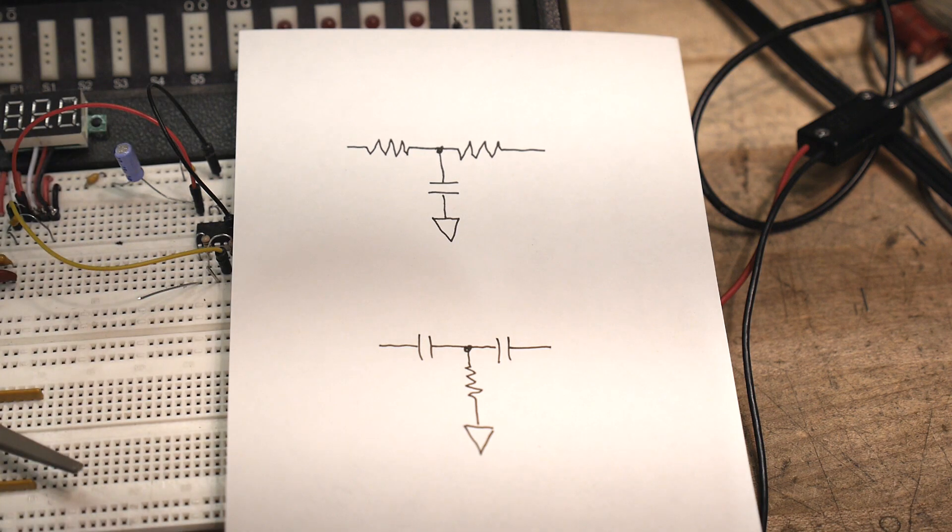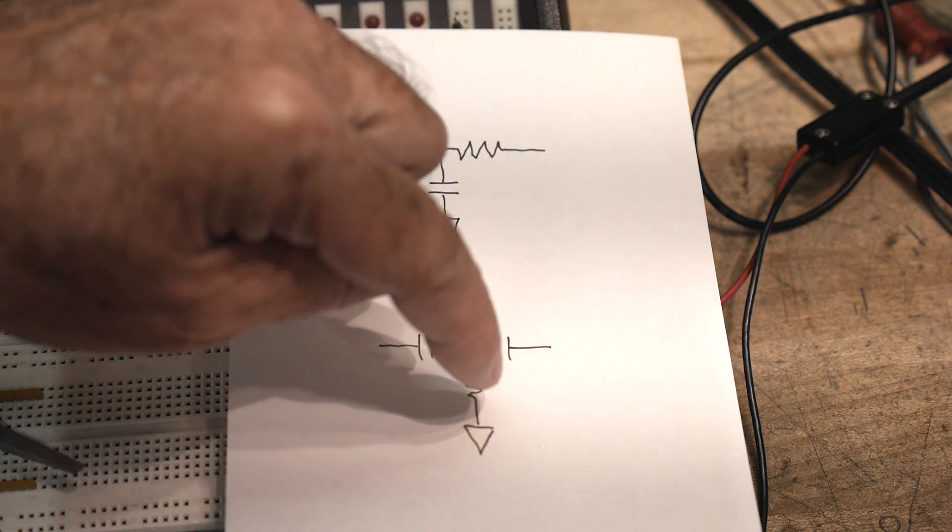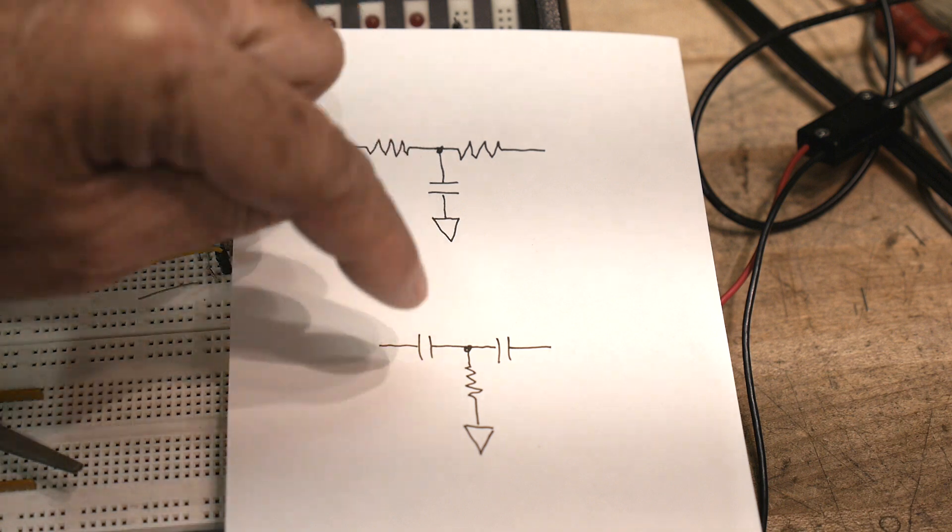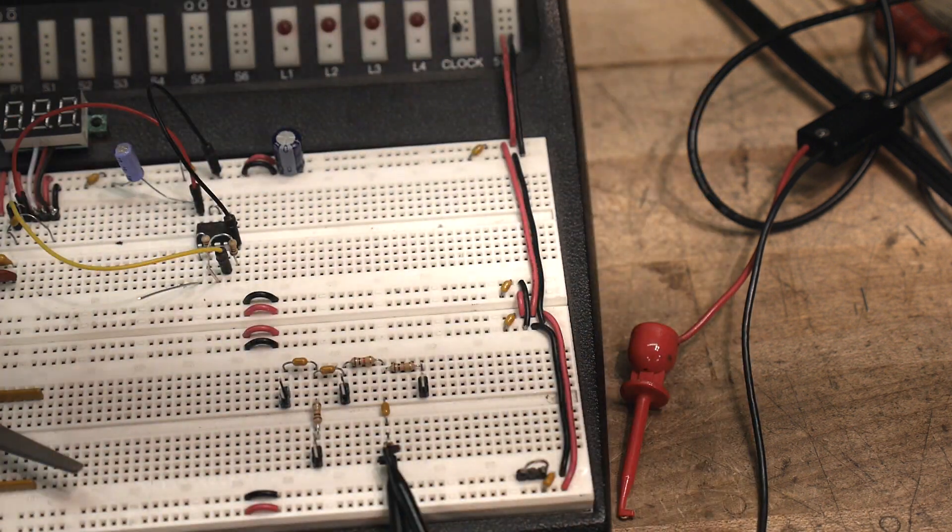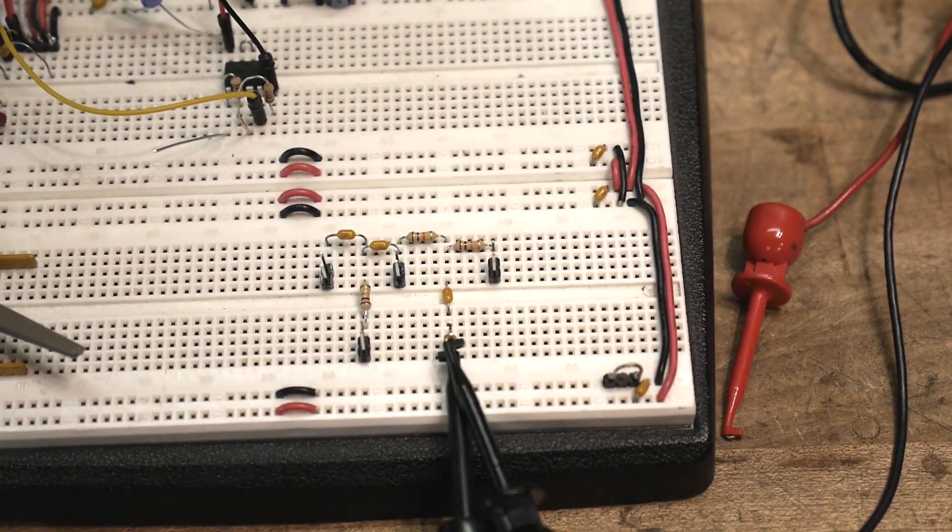I'm going to build these circuits with all the same values, so 10k, 10k, 10k, 0.01, 0.01, 0.01 microfarad capacitors. And so I have them on the breadboard here. If I can zoom in a little bit.